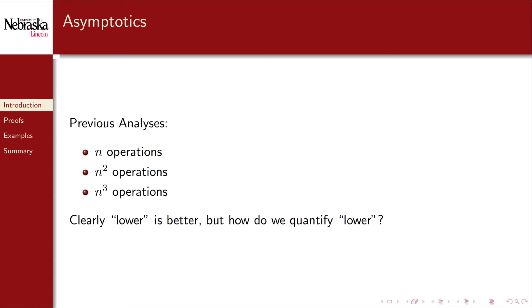Previous algorithm analysis resulted in various functions that characterized how many times the algorithm executed an elementary operation with respect to an input size of n. Some algorithms were linear, some quadratic, or even cubic. Since we want to limit the number of resources an algorithm expends, lower resource measures are better, but how do we quantify this?